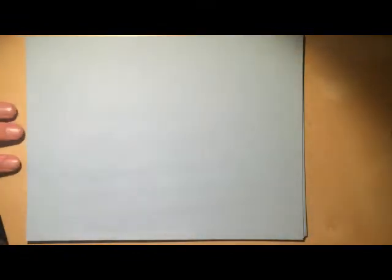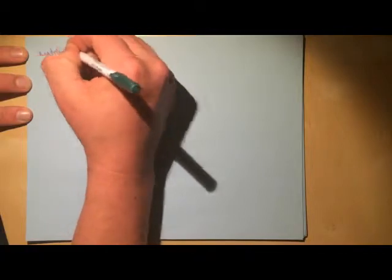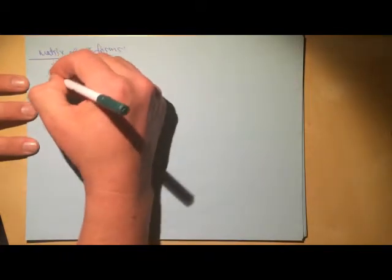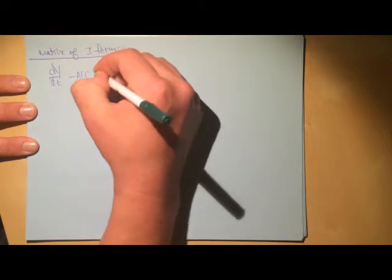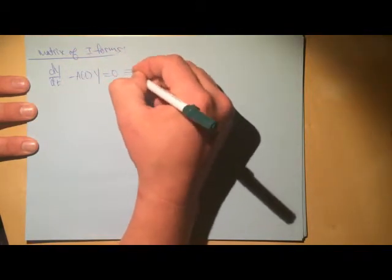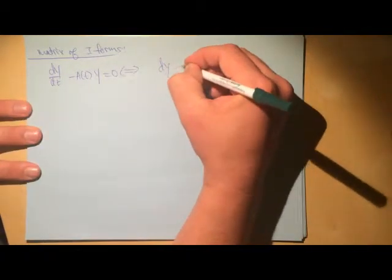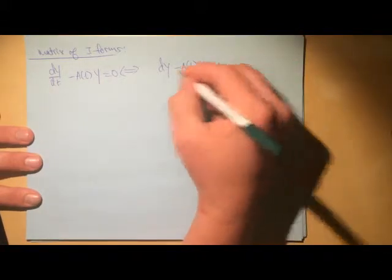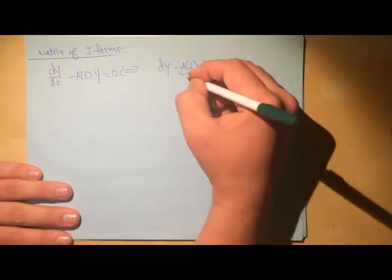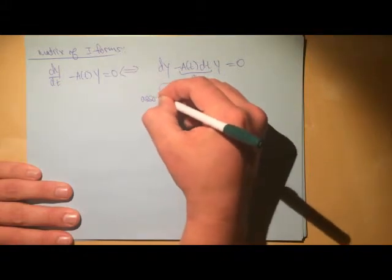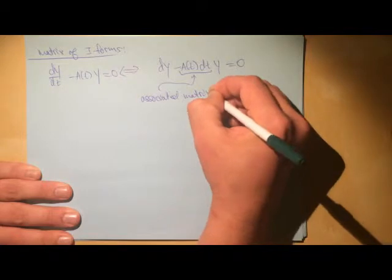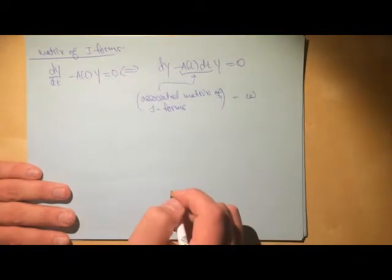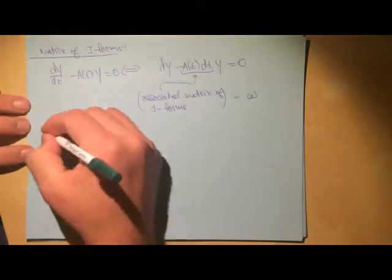The next thing is the matrix of one-forms. We take our differential equation and multiply both sides by dt, giving us something like (dY minus A(t)·Y dt) equals zero. This gives us a matrix of one-forms. We'll sometimes call this omega later on.